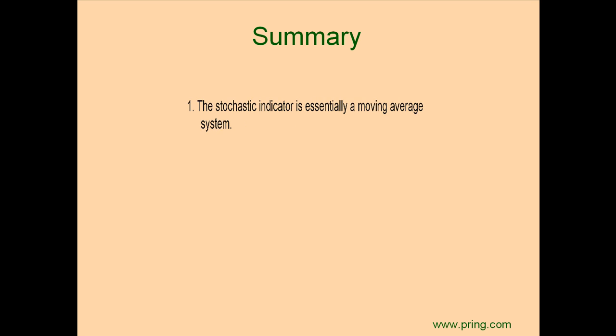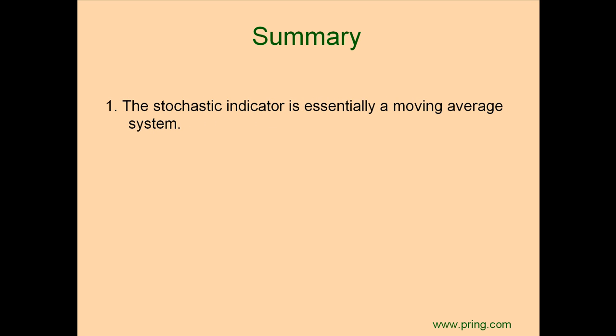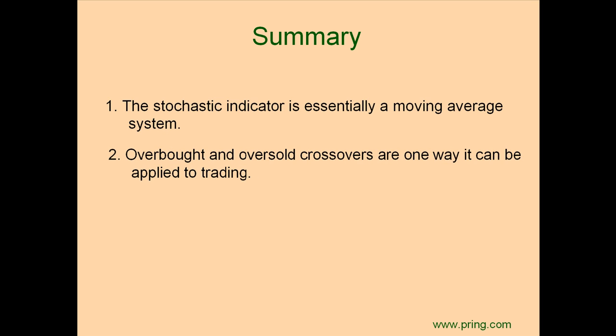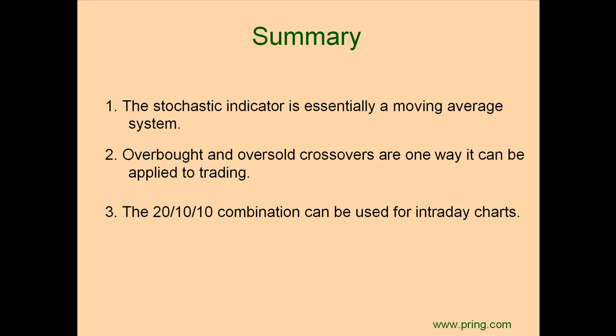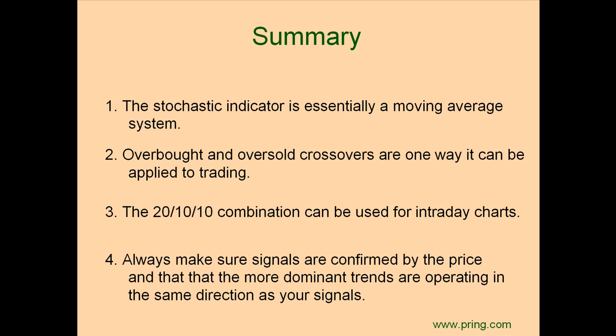In summary: one, the stochastic indicator is essentially a moving average system. Two, overbought and oversold crossovers are one way it can be applied to trading. Three, the 20-10-10 combination can be used for intraday charts. And four, always make sure signals are confirmed by the price and that the more dominant trends are operating in the same direction as your signals.